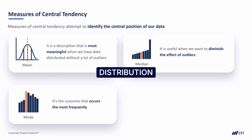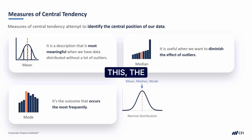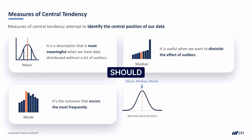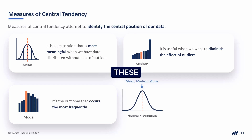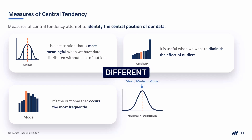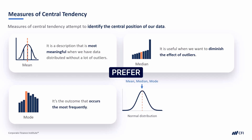If the distribution of our data looks like this, the mean, median, and mode should all fall in the middle. But in most other scenarios, these measures are not interchangeable. Each tells us something different about our data, and we may prefer one depending on what we are trying to understand.